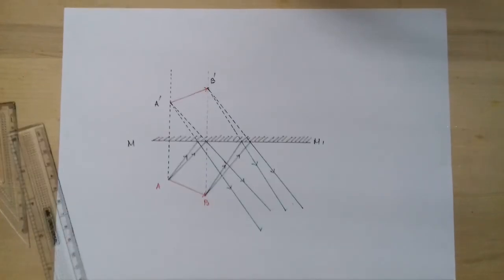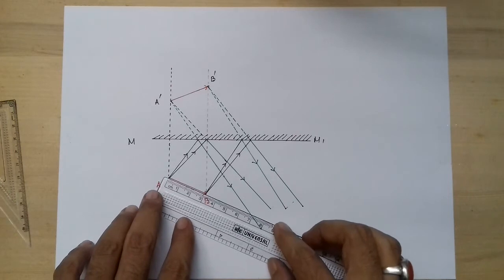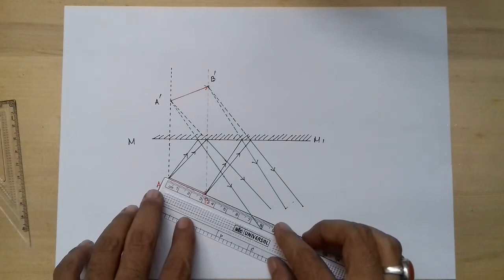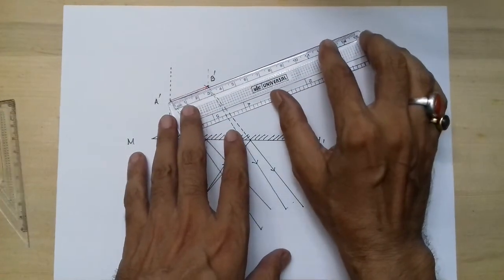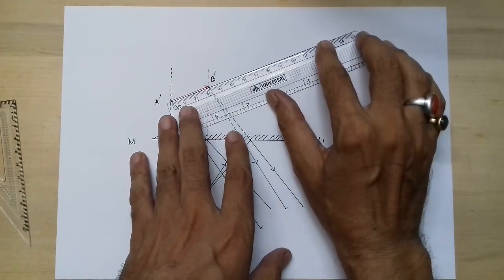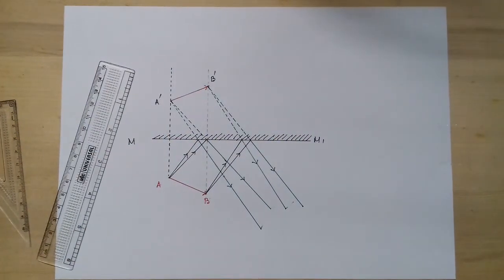Now let's measure the length of the object. The length of the object I have taken is 3 centimeters, and the length of the image is 3 centimeters. So in case of a plane mirror, the size of the object remains the same.